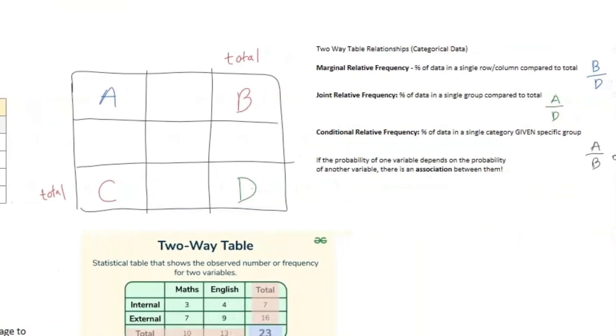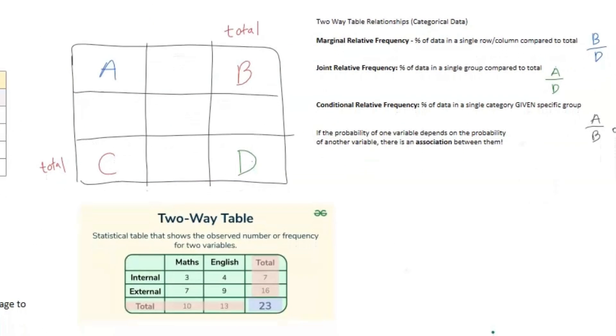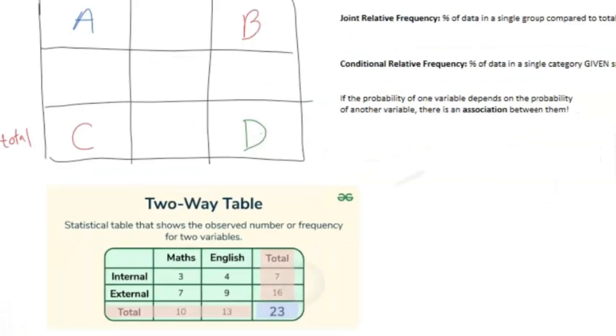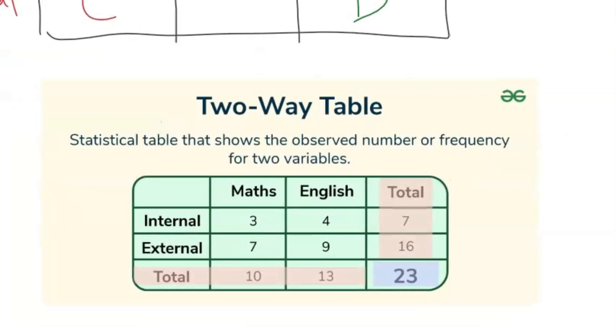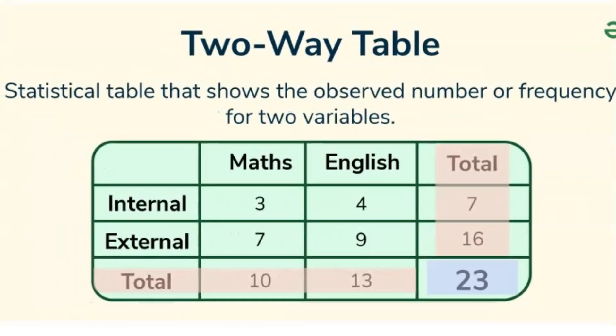So we're going to branch off here and talk about categorical data, which you want to represent with a two-way table. You've probably seen these before, but basically you have two variables on either side, and it just shows you the intersections between certain variables.